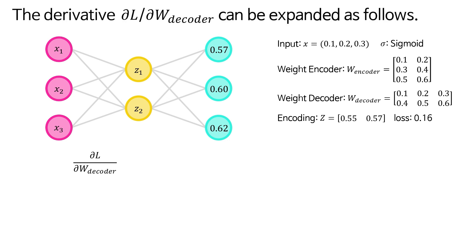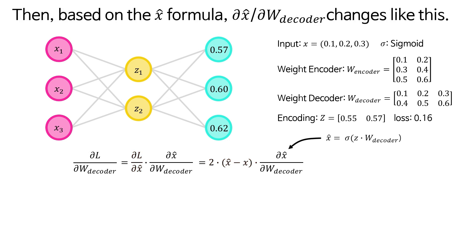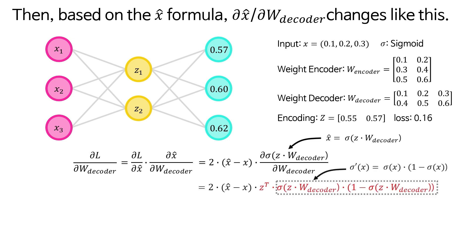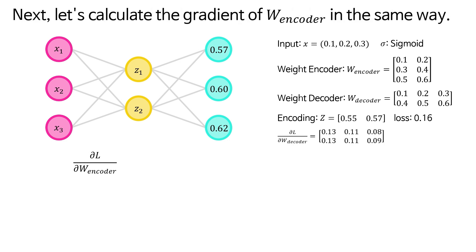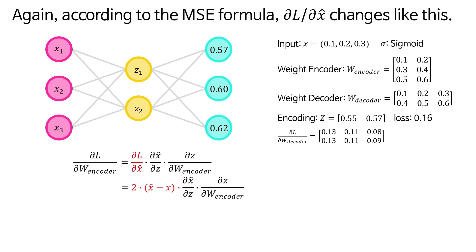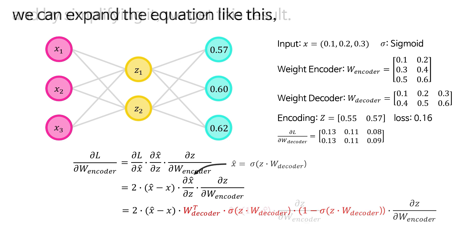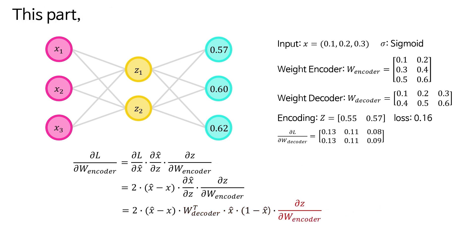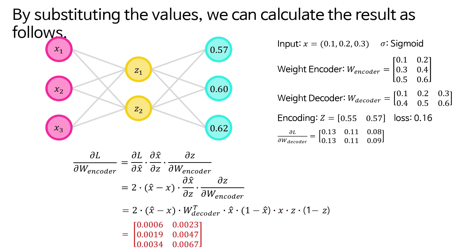The derivative ∂L/∂W_decoder can be expanded as follows. According to the MSE formula, ∂L/∂x-hat changes accordingly. Then, based on the x-hat formula, ∂x-hat/∂W_decoder changes as shown. By substituting each value, we get the result. Next, let's calculate the gradient of W_encoder in the same way. The derivative ∂L/∂W_encoder can be expanded similarly. Again, according to the MSE formula, ∂L/∂x-hat changes accordingly. Then, based on the ∂x-hat/∂z formula, we can expand and simplify the equation to get the result. By substituting the values, we can calculate the final result.